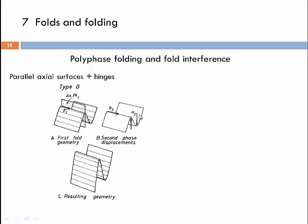When two parallel folding events overprint each other, a pre-existing fold simply gets further tightened. These are very difficult to identify as two separate events, and you would probably need detailed research — perhaps using thin sections to identify different deformation temperatures — to distinguish them. More obvious is polyphase folding when the fold geometry of the first folding event differs from the second.